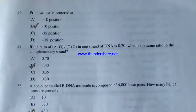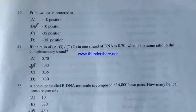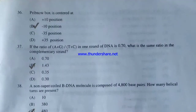Pribnow box is centered at plus 10 position, minus 10 position, minus 35 position, or plus 35 position? The answer is B — minus 10 position. Pribnow box is centered at the minus 10 position.